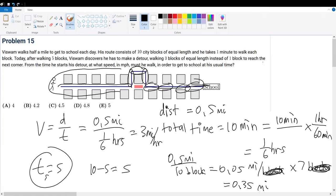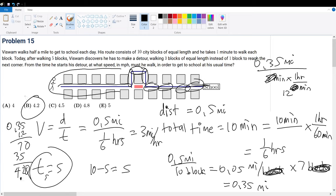So 0.35 miles divided by the time it must take him to go there, which in this case is five minutes. Five minutes, we must convert this to hours, so times one hour divided by 60 minutes will give us our final answer. Five divided by 60 is 12, so what is 0.35 times 12? 0.35 times 12 is 4.2. So your answer will be answer choice B.